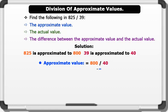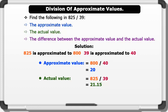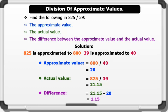To find the approximate value, we divide 800 by 40, which gives us 20. To find the actual value, we simply divide 825 by 39, which gives us 21.15. The difference between the actual value and the approximate value is 21.15 minus 20 equals 1.15. That's brilliant.